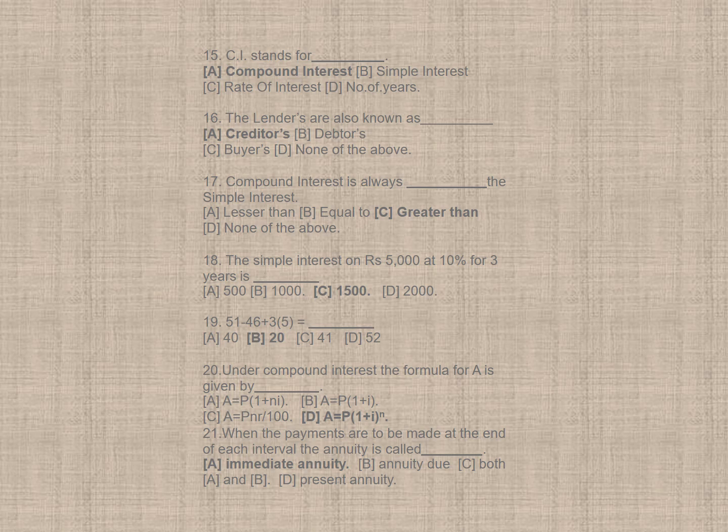Question 20. Under compound interest, the formula for A is given by, correct option is D, A is equal to P times 1 plus I to the power N.